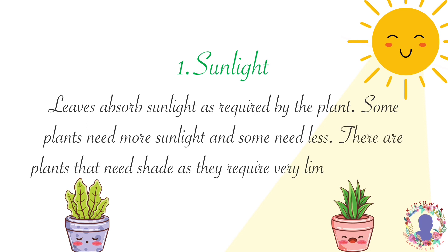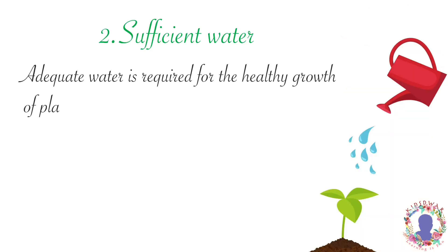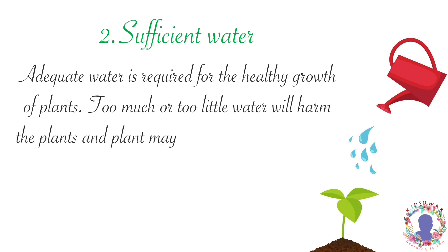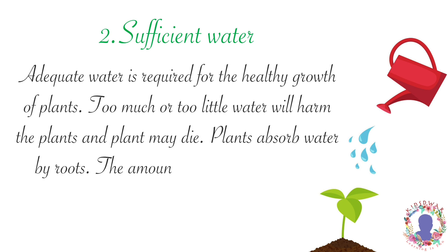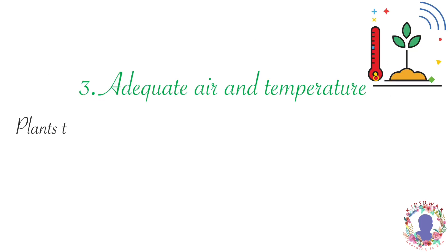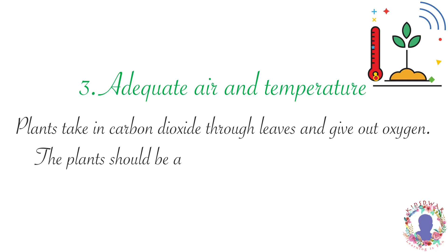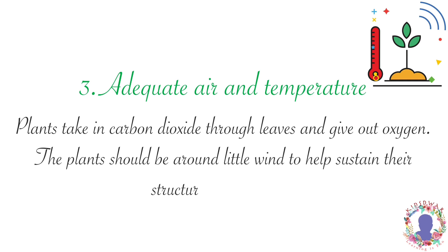There are plants that need shade as they require very limited amount of sunlight. Second, sufficient water. Adequate water is required for the healthy growth of plants. Too much or too little water will harm the plants and a plant may die. Plants absorb water by roots. The amount of water needed varies between all types of plants. Third, adequate air and temperature. Plants take in carbon dioxide through leaves and give out oxygen.